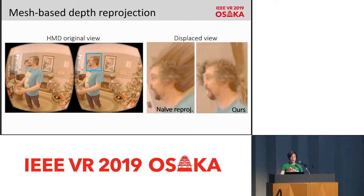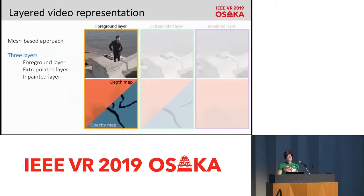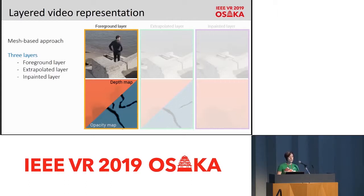In order to successfully deal with these occlusions, we need to first identify which triangles will become occlusion boundaries and then fill them with information on what's behind them. To do this, we need to introduce more complexity in our system. Our approach uses a video representation based on three layers. The foreground layer is just the original video with its corresponding depth map. When a new point of view needs to be rendered, we need additional information to fill these occlusions, and for this purpose we have two additional layers.